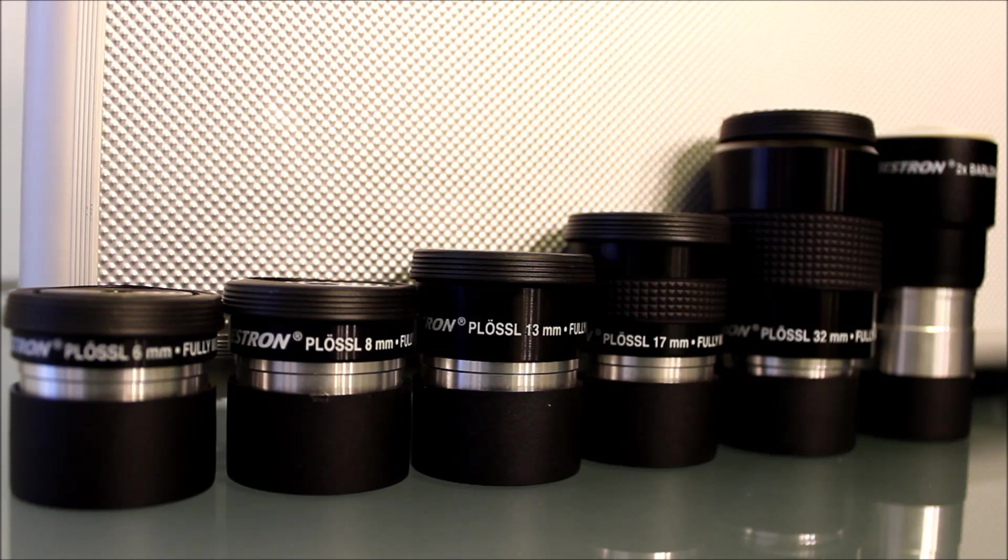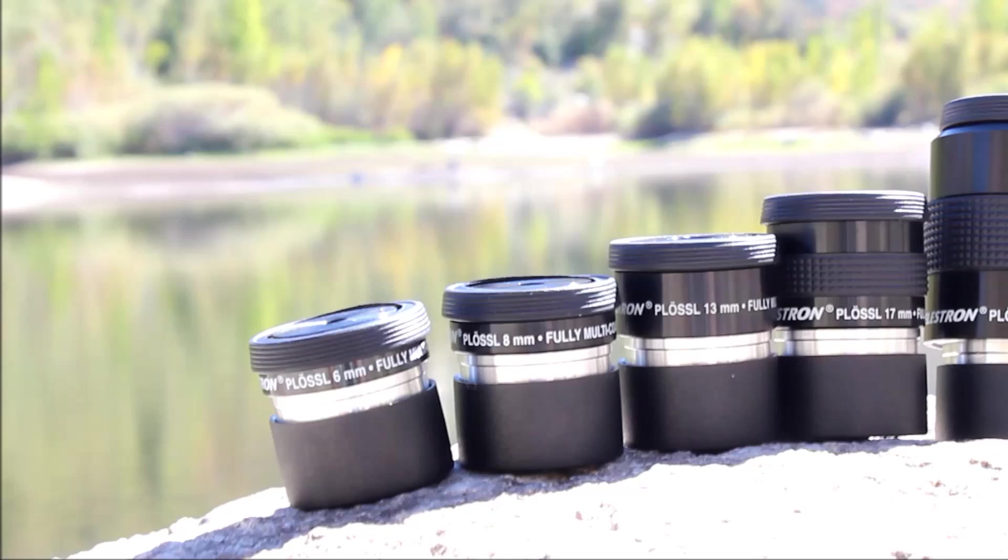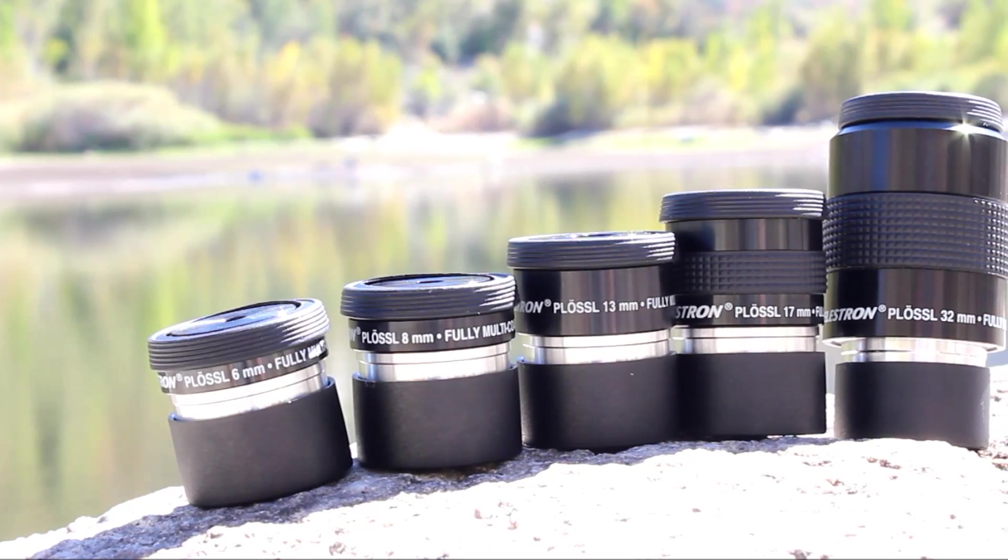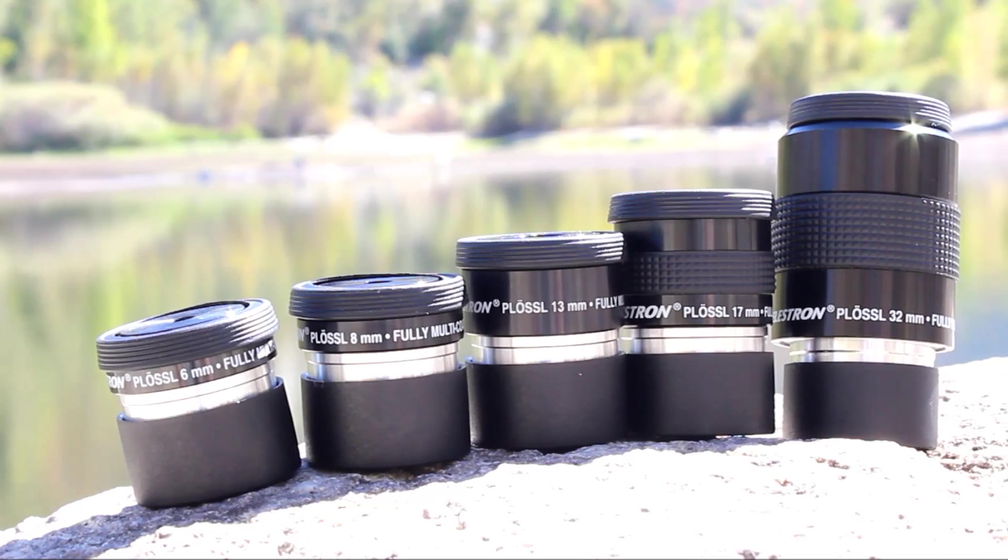All five of the eyepieces that come in the Celestron 1.25 inch kit are of the Plossl design. And the Plossl design consists of two achromatic lens pairs, so four lenses total.